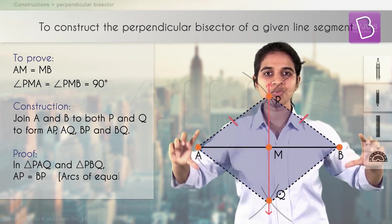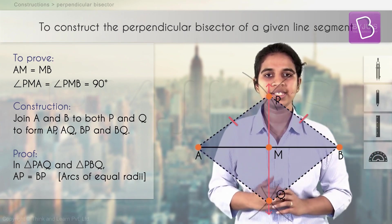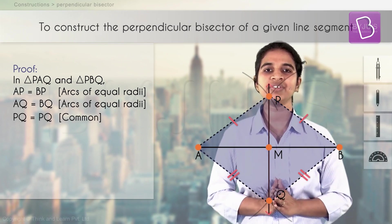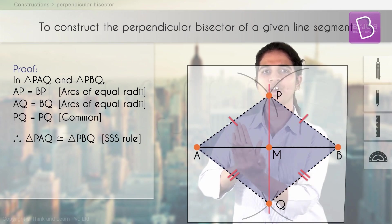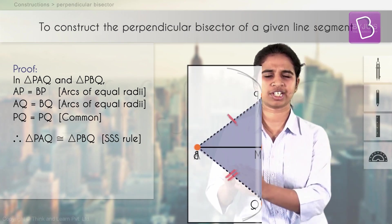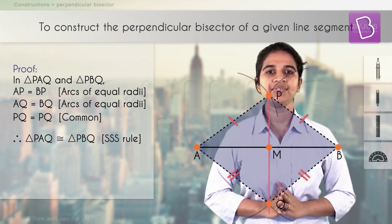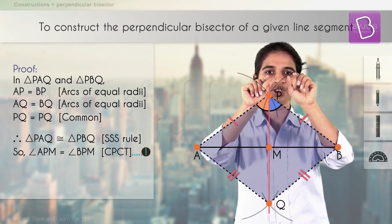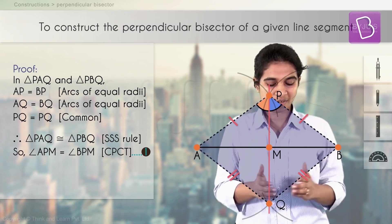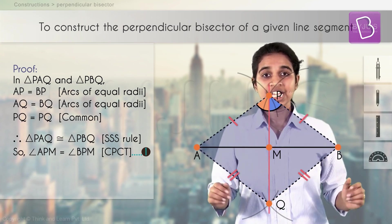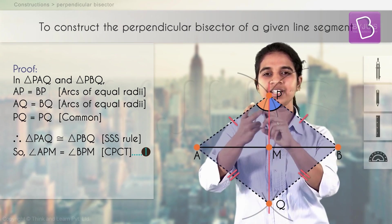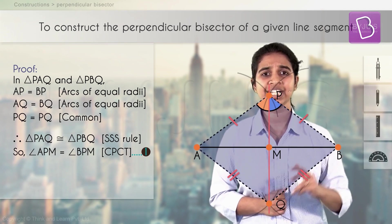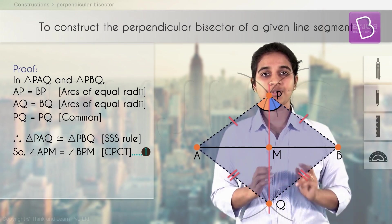PA and PB are equal — because we kept the compass at A, took the same length, and drew the arcs. Similarly, QA and QB are equal — same reason, the arcs drawn from both sides had the same length. Side PQ is common to both triangles. So by SSS, these two triangles are congruent, and therefore angle APM and angle BPM are equal.